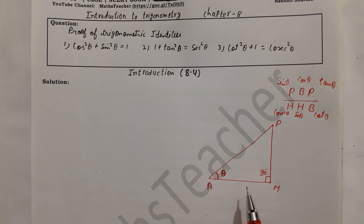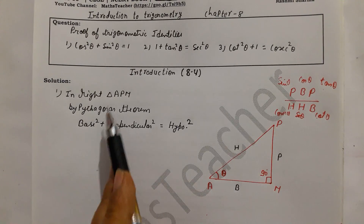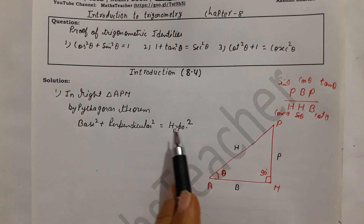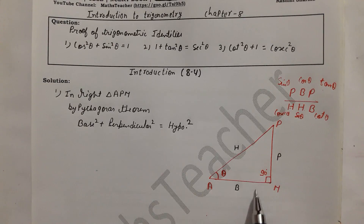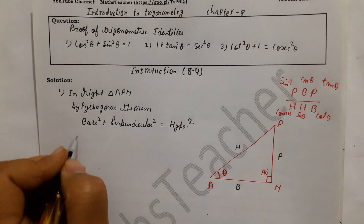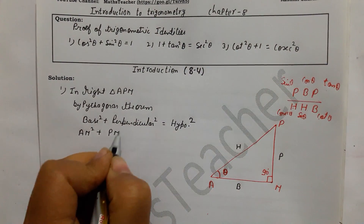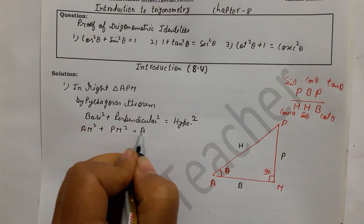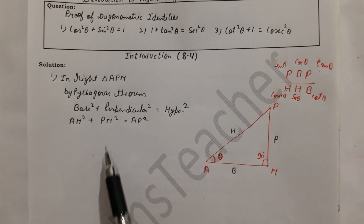In a right angle triangle we use the Pythagoras theorem: base² + perpendicular² = hypotenuse². Here AM is the base, PM is the perpendicular, and AP is the hypotenuse. So we write: AM² + PM² = AP². We will divide this equation from three different sides to obtain the three identities.